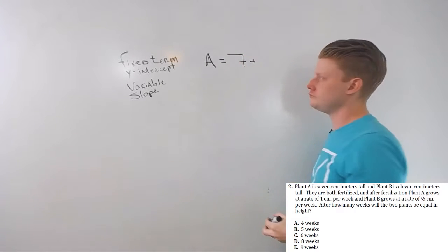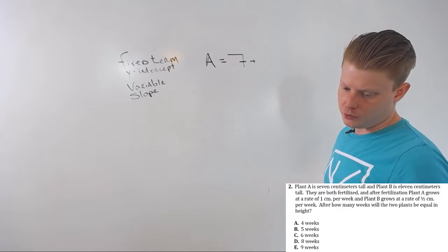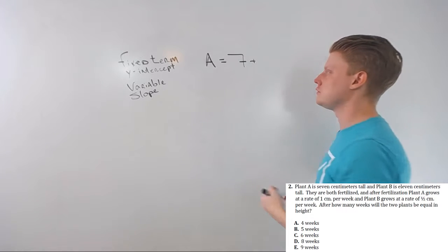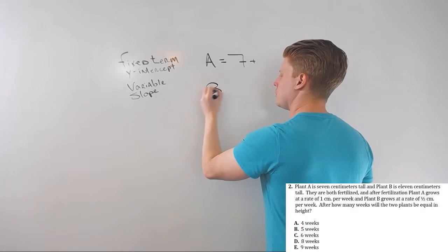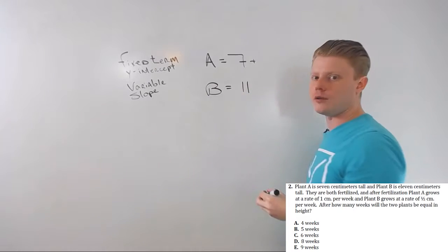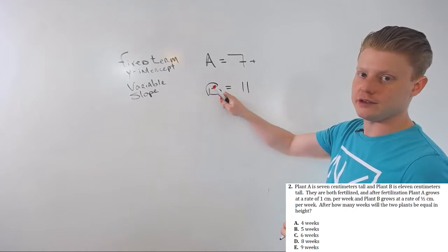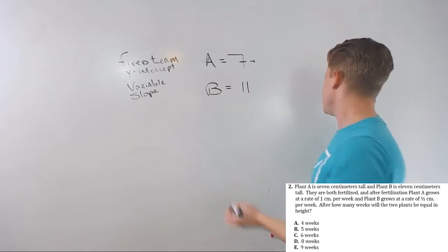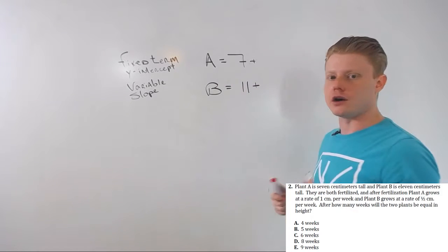Plus, plant B, so we're changing topics, that's a little semantic trick to throw you off a little bit, is 11. Same deal, B equals 11, that's its status right now, it's not a rate, so that's our y-intercept or fixed.